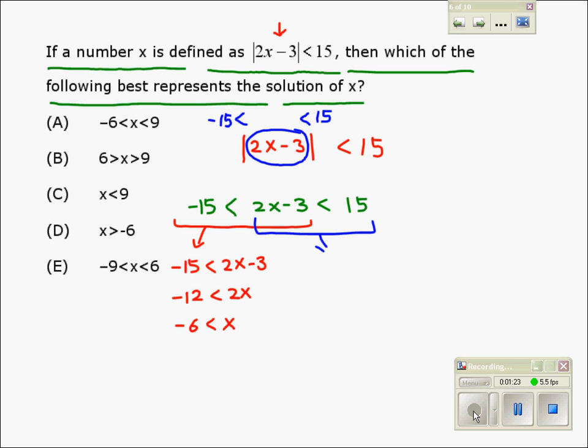Solving the other part, we write 2x minus 3 is less than 15. Now, adding 3 on both sides, we get 2x is less than 18. Dividing both sides by 2, we get x is less than 9.